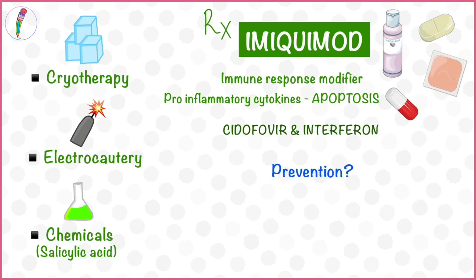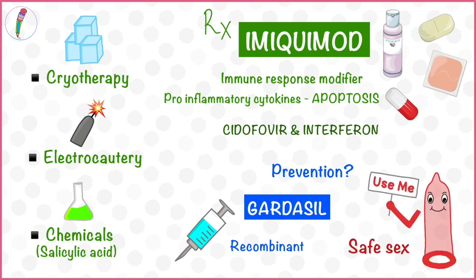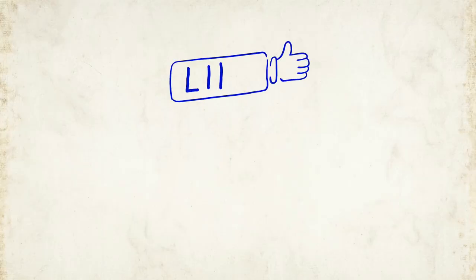Can HPV infection be prevented? Yes, there are effective vaccines available, the most common of which is Gardasil. There is also a newer recombinant vaccine now available. However, the most important method of prevention is to always practice safe sex.